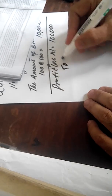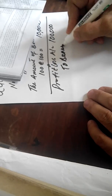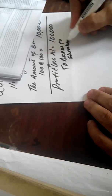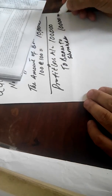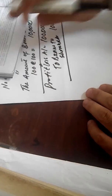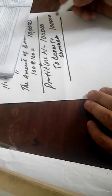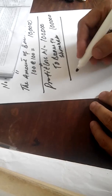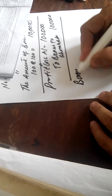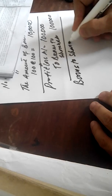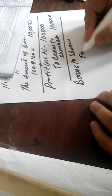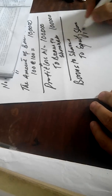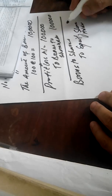The journal entry is: Profit and Loss Account Dr. 100,000 — to Bonus to Shareholders (Equity Share Capital) 100,000. That is the complete journal entry.